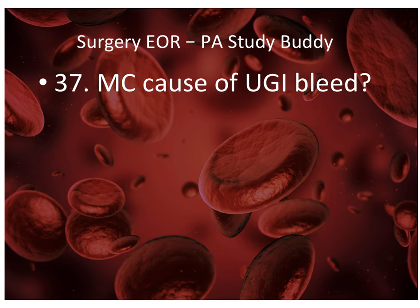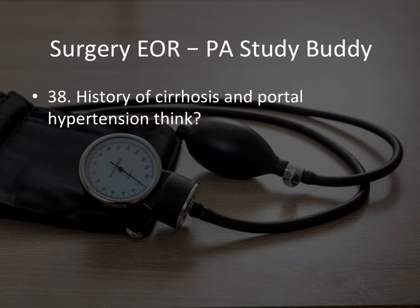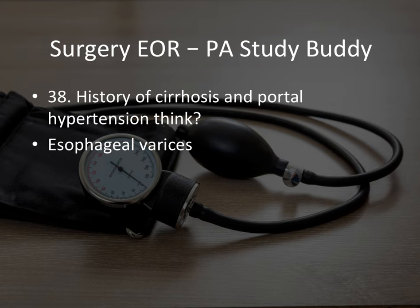Most common cause of upper GI bleed: that would be peptic ulcer disease. History of cirrhosis and portal hypertension should make you think of esophageal varices. They'll give you different answer choices similar in location and presentation, but if the patient has a history of cirrhosis and portal hypertension, the answer is esophageal varices.